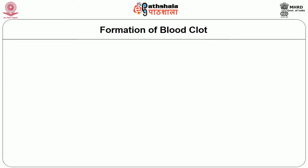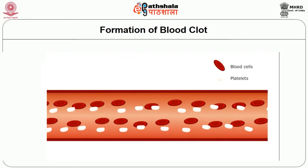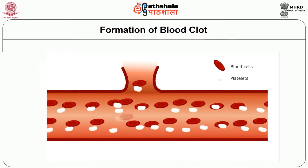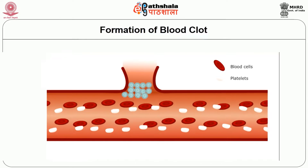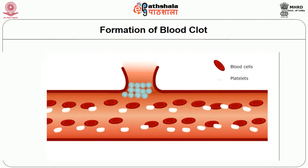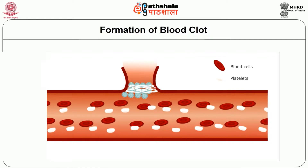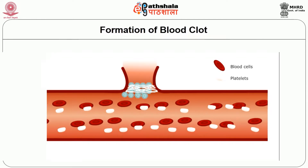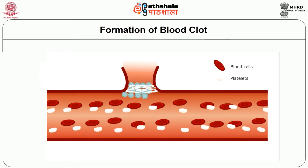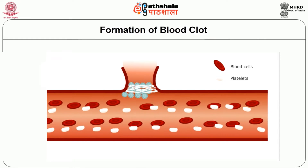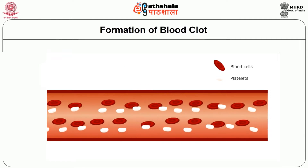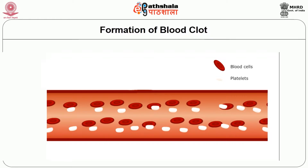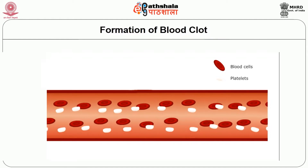The second step in hemostasis is formation of a blood clot. The platelet plug alone is not sufficient to stop bleeding; a solid clot is needed. Activated substances from the vessel wall at the site of injury, from the platelets, or from blood proteins adhering to the vessel wall initiate the clotting process. Within 3 to 6 minutes after rupture of the vessel wall, the vessel gets filled with a solid clot. After 30 minutes to 1 hour, the clot retracts and closes the vessel wall.